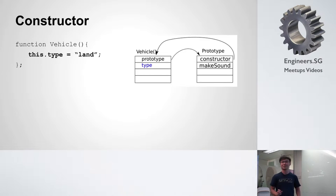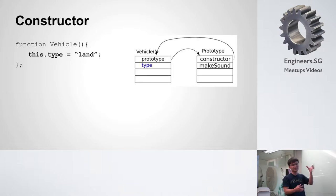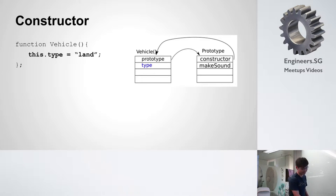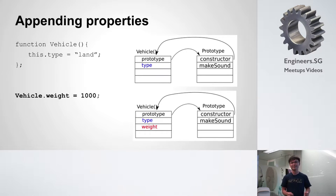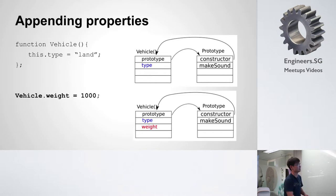Now let's talk about the constructor. When you define "function vehicle" and write the body of that function, you're actually making a constructor. The "this" keyword refers to the new object you're creating when you do "new something." So you can add properties to it. There are two ways to add properties: the first is in the constructor, and the second is on the actual function object.